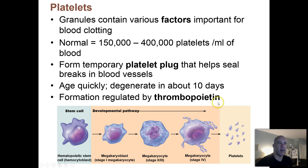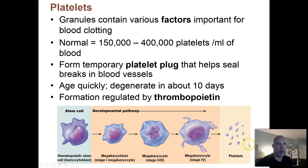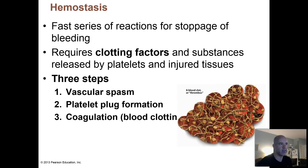There is a hormonal-type chemical messenger that travels to the red bone marrow and signals for more platelet production, so you wind up with more platelets. That chemical is called thrombopoietin, since your platelets are also called thrombocytes.